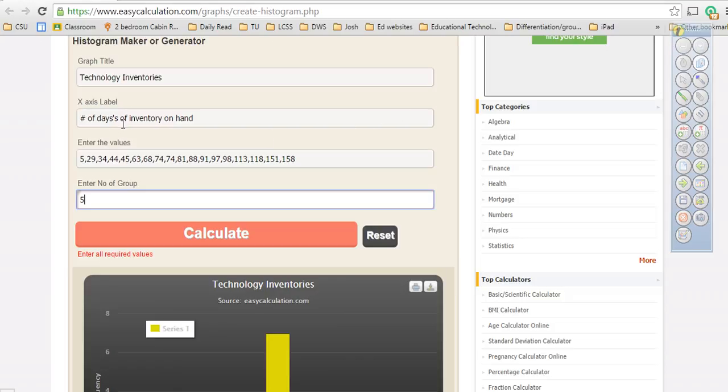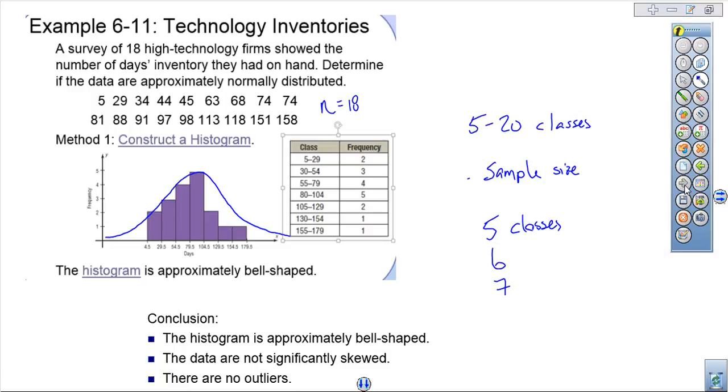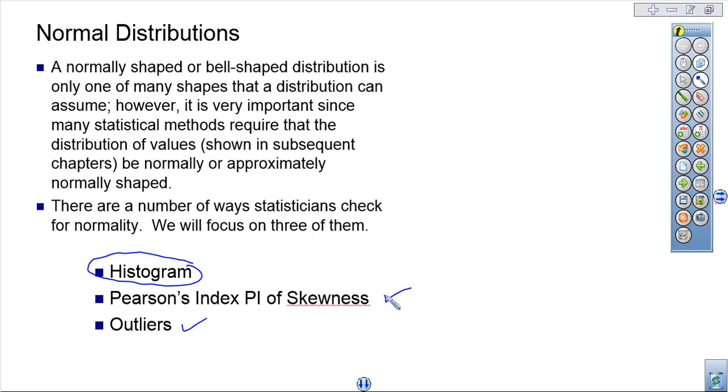That's how you find normality. Find normality through a histogram. That's the best way. You can also find normality through a Pearson's index, which you can look that up. It's in your textbook. You can Google it, or you can find it through an outlier. Both the Pearson's index and the outlier have formulas, and you just plug things into your formula, and it tells you whether or not you're inside the range or outside the range of what's appropriate to be considered an outlier or to being too skewed. Alright?